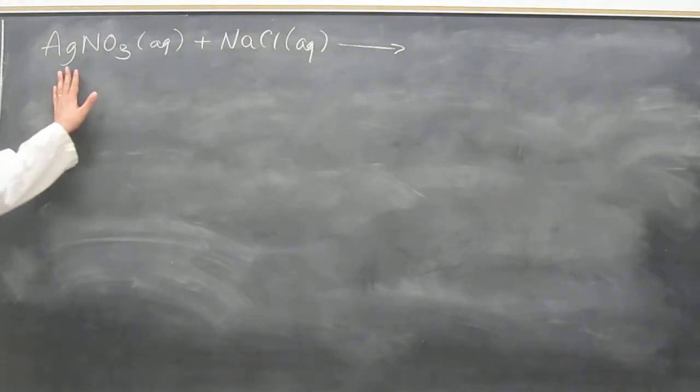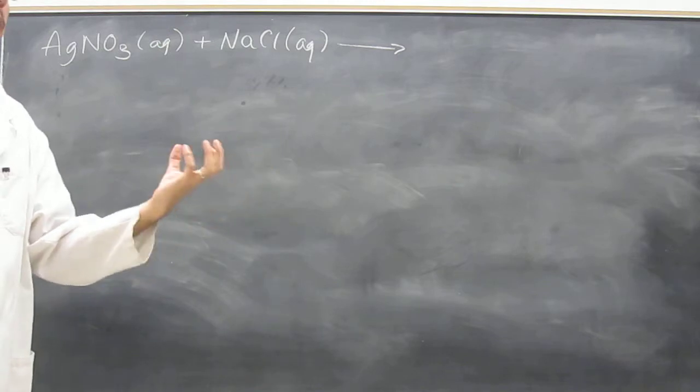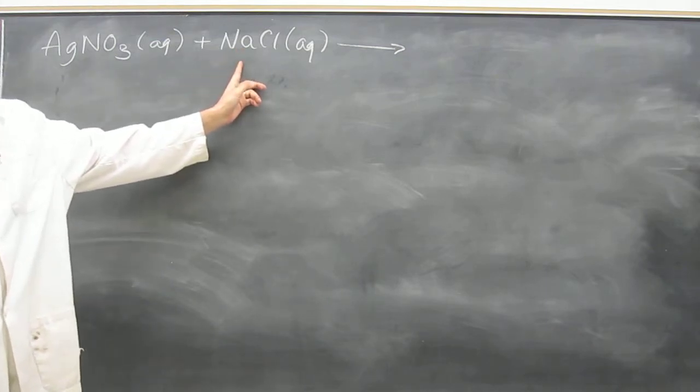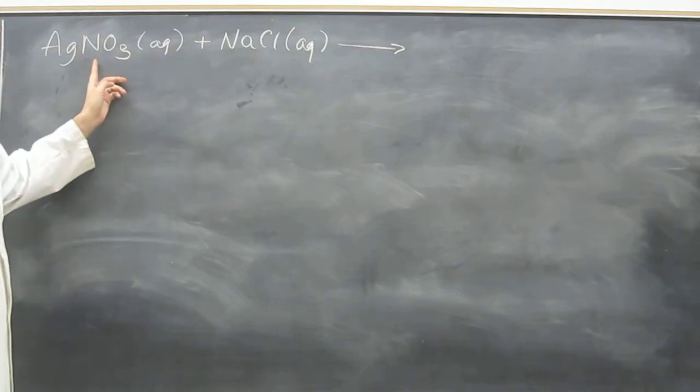When you mix these two things together, a solid precipitate comes out. That solid precipitate, if you know your spectator ion rules, must be silver chloride. Why? Because sodium is a group one element. Group one elements are always spectator ions. Nitrate is always a spectator ion.